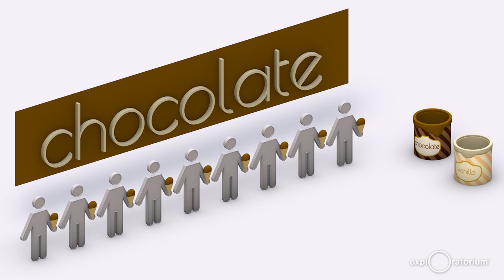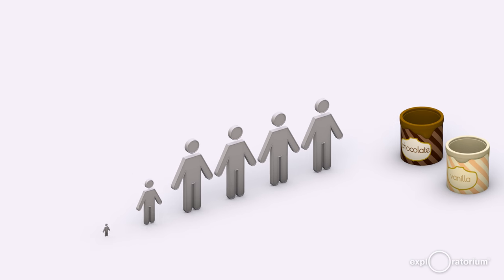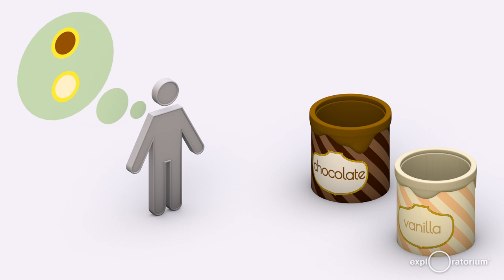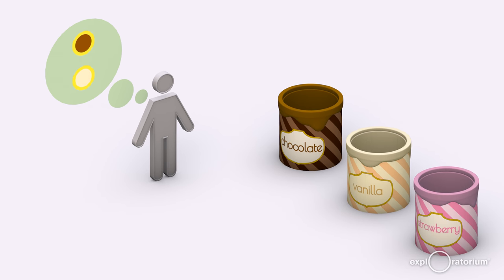But if there are more than two options, things get complicated. Let's go back to the individual voter. By asking for chocolate, they are revealing that they prefer chocolate to vanilla — they have an internal ranking which places chocolate above vanilla. Now imagine that before they receive their ice cream, a third flavor, strawberry, is added, and this person is given the opportunity to choose again. How will they decide? In order to make a choice, they must figure out where strawberry goes in their overall ranking.